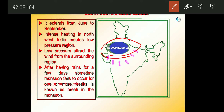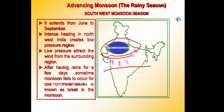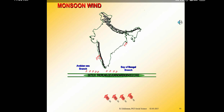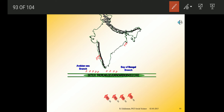These southeast trade winds originate over the warm subtropical areas of the southern oceans. From the southern oceans, these winds cross the equator and blow in the southwesterly direction, entering the Indian peninsula as the southwest monsoon.